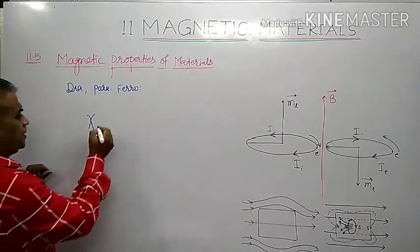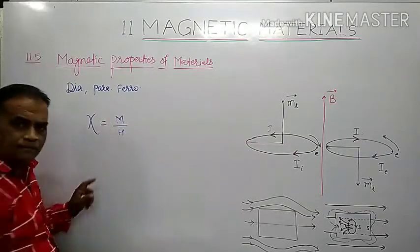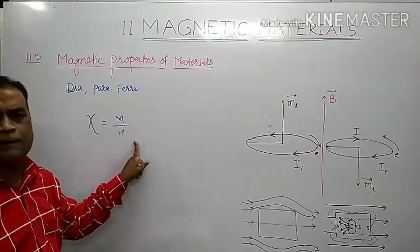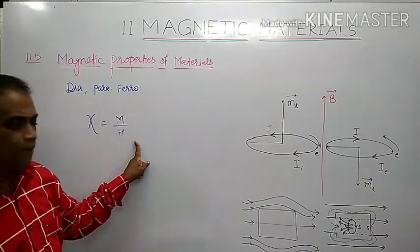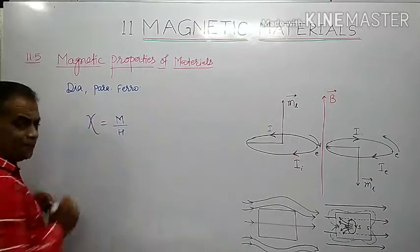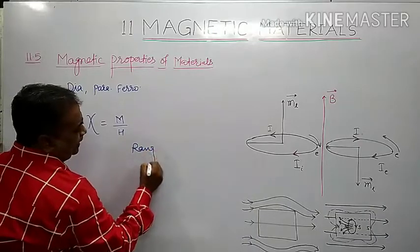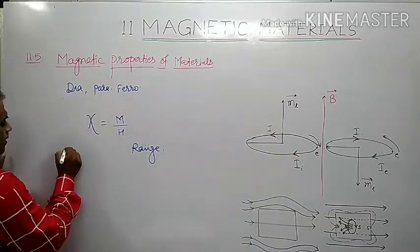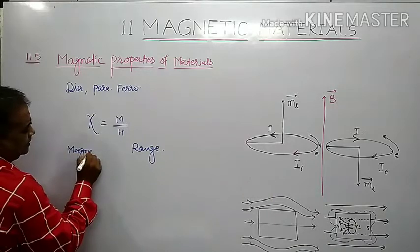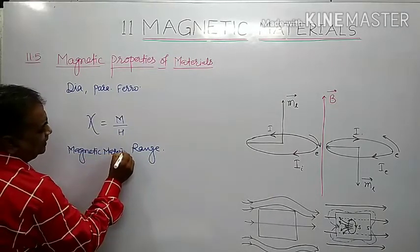Magnetic susceptibility is actually the ratio of magnetization to that of magnetic field intensity. As far as the range of magnetic susceptibility for different magnetic materials is concerned, for a diamagnetic material, the magnetic susceptibility must lie within the range of minus 10 raised to minus 3 to minus 10 raised to minus 5.